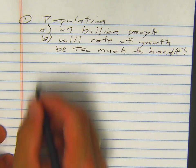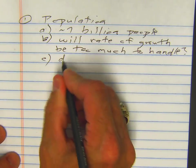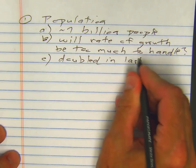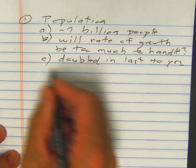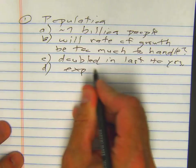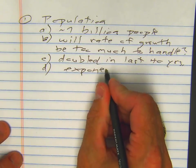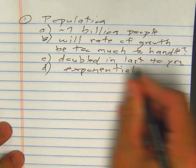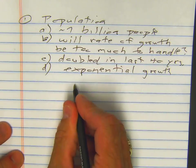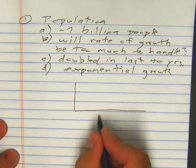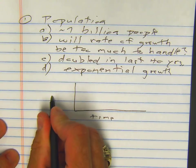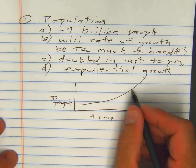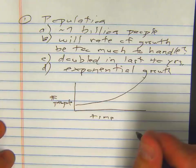Something interesting about this: the population has doubled in the last 40 years. This leads to what's called exponential growth — instead of a nice linear growth, this is exponential growth where the population grows very, very quickly. The exponential growth curve will look something like this, with time on the horizontal axis and number of people on the vertical, and it can even be more steeply sloped in some areas.